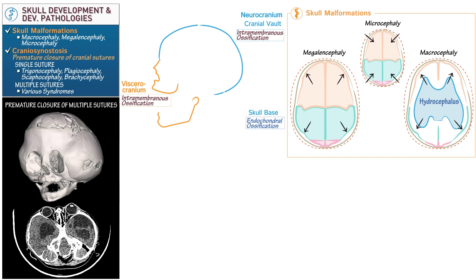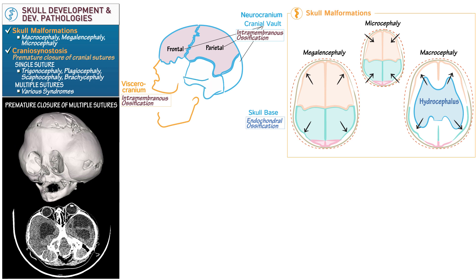Now let's apply our knowledge of skull anatomy to learn about the skull sutures. Within the cranial vault, we distinguish the frontal bone, parietal bone, upper portion of the occipital bone, and squamous portion of the temporal bone — all developing via intramembranous ossification. Key bones of the skull base include the lower portion of the occipital bone, the petrous portion of the temporal bone, and the sphenoid bone, all developing via endochondral ossification.